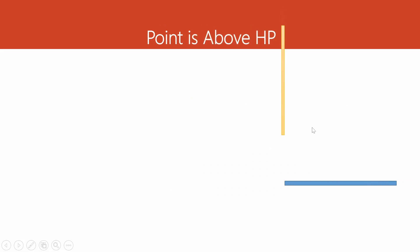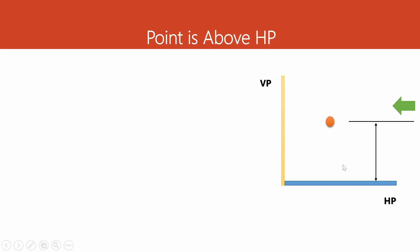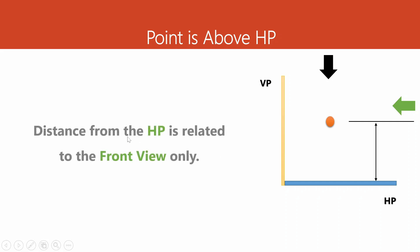To understand this better, we'll see the 2D view. This is the horizontal plane and this is the vertical plane. The point is present above the HP, so this distance is above the HP. From the front view, this distance is visible; from the top view, it is not. So the first important point to note: distance from the HP is related to the front view only. Whenever a distance is given with respect to HP, use it for drawing the front view.